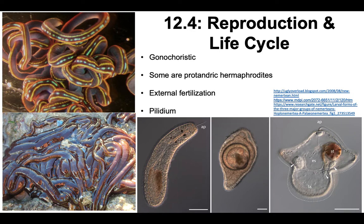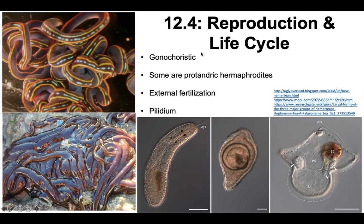In terms of reproduction and life cycle, they are gonachoristic, meaning they have separate sexes in separate individuals. Most ribbon worms reproduce sexually and are gonachoristic. Some are sequential hermaphrodites — specifically protandric hermaphrodites, meaning they are male first and then become female later in life. A lot of the ones that are not gonachoristic are protandric hermaphrodites.